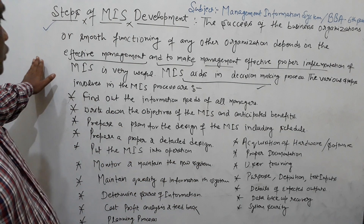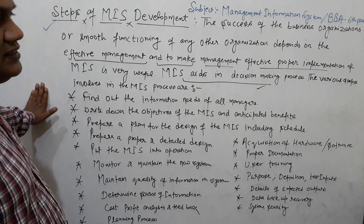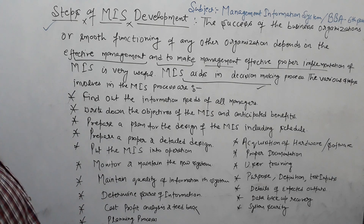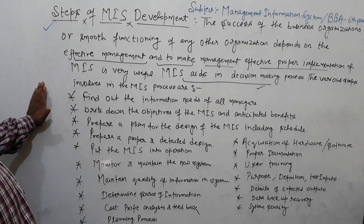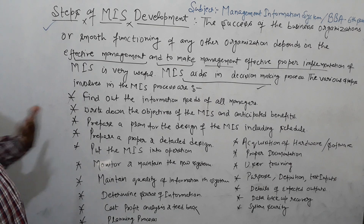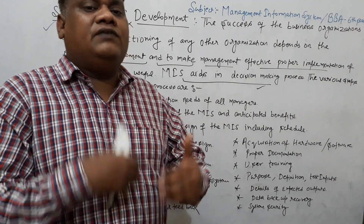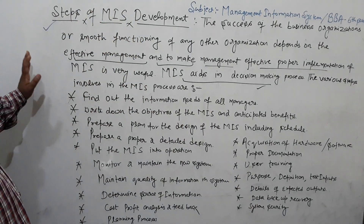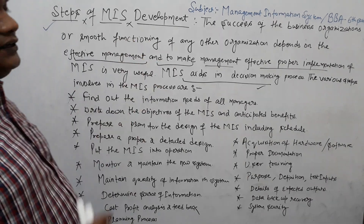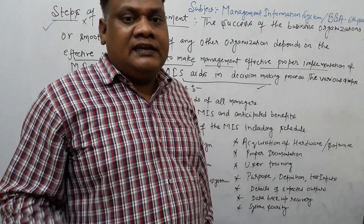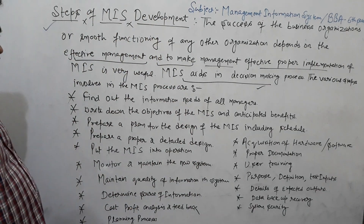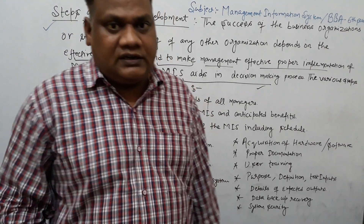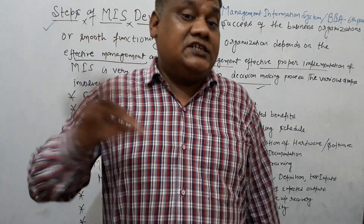There are various steps involved in the MIS process — both major and minor steps — which we can use to build a proper, healthy MIS system. After research, we need to find out the information needs of all managers across different levels of the organization.